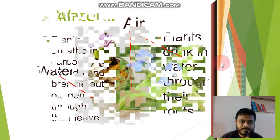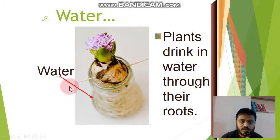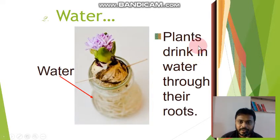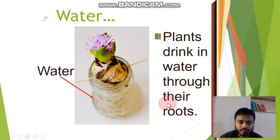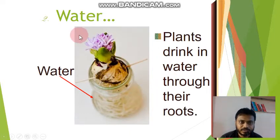Second thing, water. Like us, plants also drink water. Plants drink in water through their roots. All living things — humans, animals, plants — they need water. Without water, they cannot live. So the second thing plants need to grow is water.